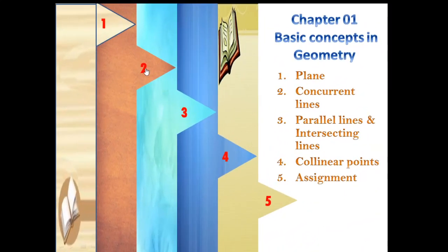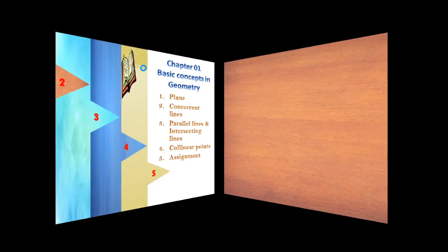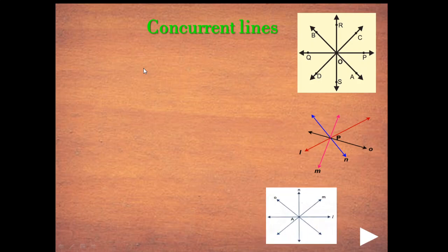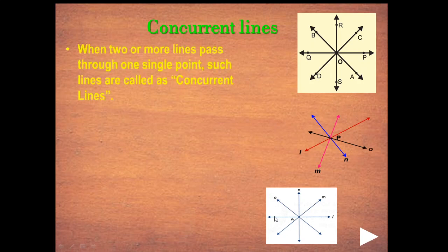The second topic we are going to cover is concurrent lines. Now, looking at the diagrams provided, in all of them we can see that using only one point in the middle — like point O, point P, or point A — there are many lines in each diagram. We can see many lines in each diagram that pass through a single point. When two or more lines pass through one single point, such lines are called concurrent lines.